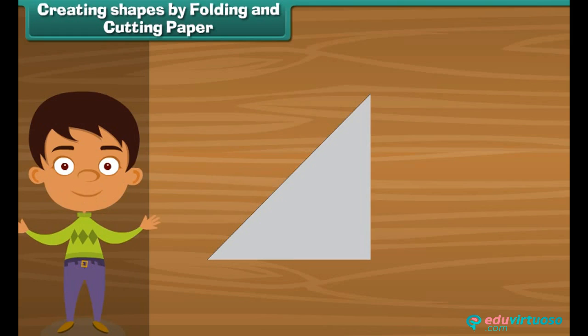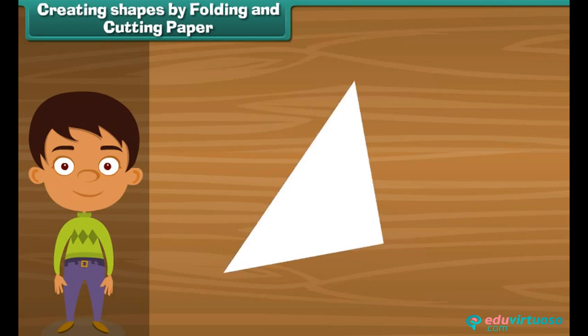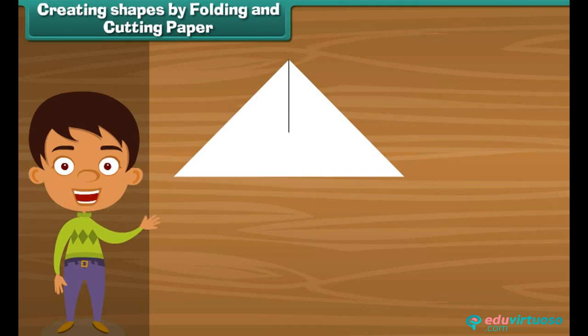After folding, we get the shape like this. Again, draw a line on it like this. Again fold it on the line. Now you will get a smaller triangle than the previous one. Draw a curved line on it.